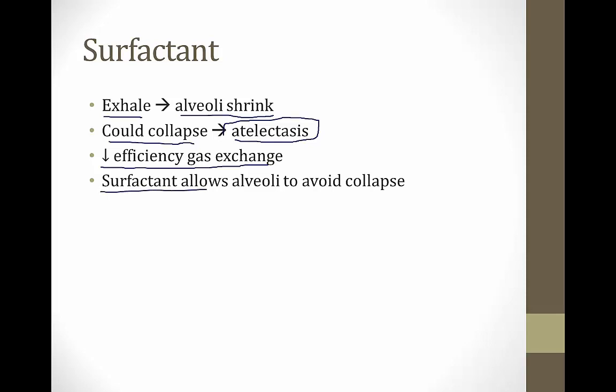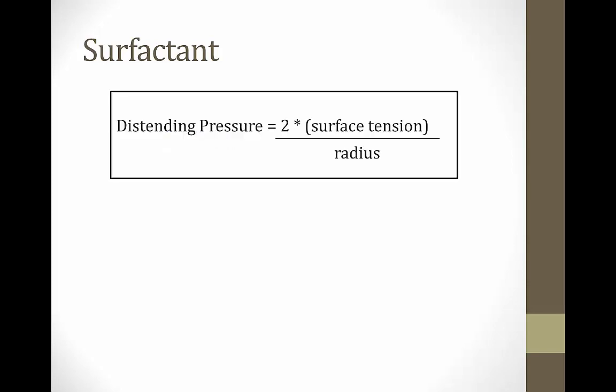To understand how surfactant keeps the alveoli open, we need to review the law of Laplace as it applies to a sphere. It states that the distending pressure to keep a sphere open equals two times the surface tension divided by the radius. If the pressure inside a sphere fell below this distending pressure, the sphere would collapse.